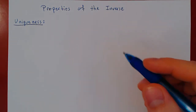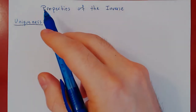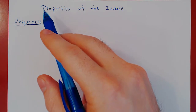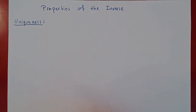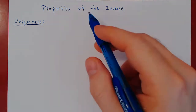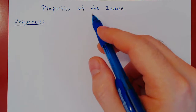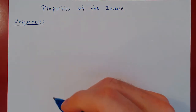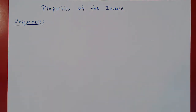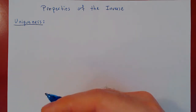In this video, we will prove or look at properties of the inverse. The first property implies uniqueness of the inverse. So if an inverse of A exists, it actually is unique.